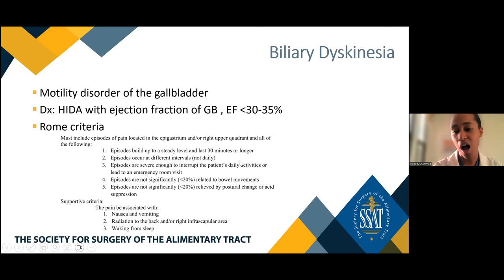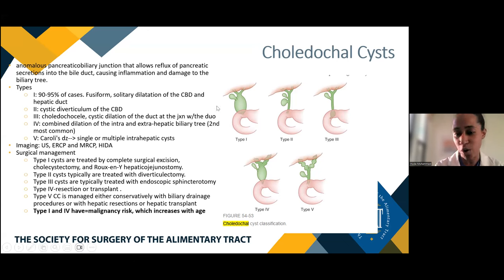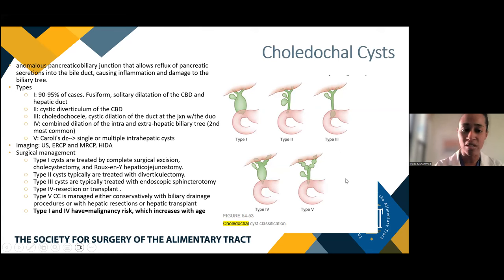Biliary dyskinesia is a motility disorder of the gallbladder — essentially a diagnosis of exclusion using the Rome criteria. You diagnose it with a HIDA scan with an ejection fraction; a gallbladder ejection fraction of 35% or less is indicative of biliary dyskinesia. Treatment is cholecystectomy. Choledochal cysts are anomalous pancreatic biliary junctions allowing reflux of pancreatic juices causing chronic inflammation. Type 1 is the most common — fusiform dilation of the CBD — and has malignant potential; treatment is resection and biliary reconstruction. Type 4, with combined intra and extrahepatic biliary tree dilation, also has malignant potential. For Caroli's disease or Type 4, a liver transplant may be needed.